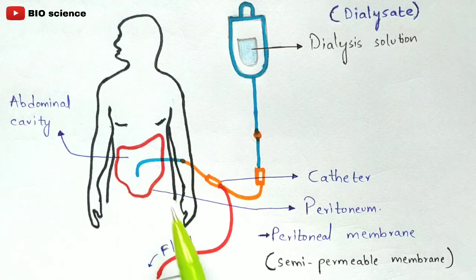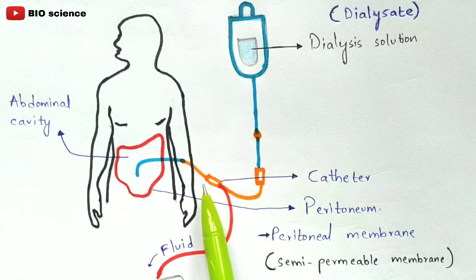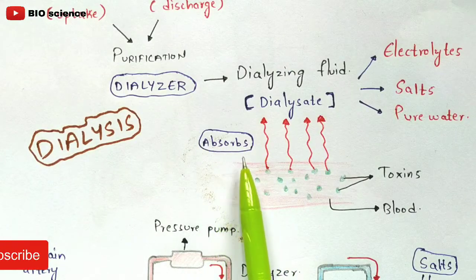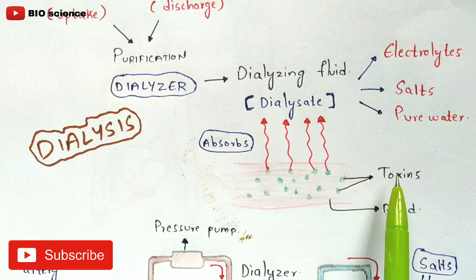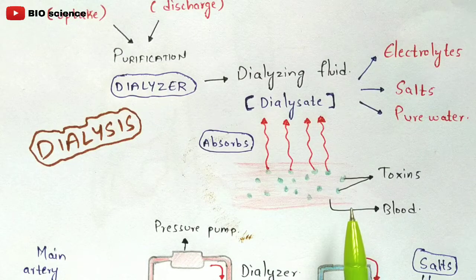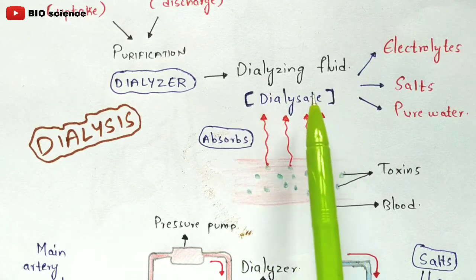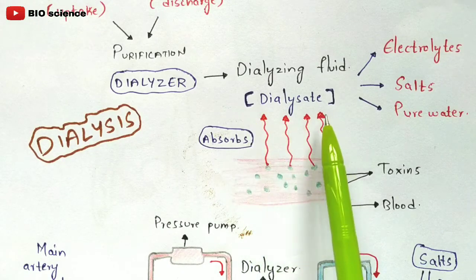The abdomen is covered by the peritoneal membrane, which is a semi-permeable membrane. Once the dialysate solution enters this peritoneal cavity, it uses its absorbing capacity to absorb toxins — nitrogenous waste material — from the impure blood. The toxins (shown as green dots) are absorbed by the dialysate fluid.